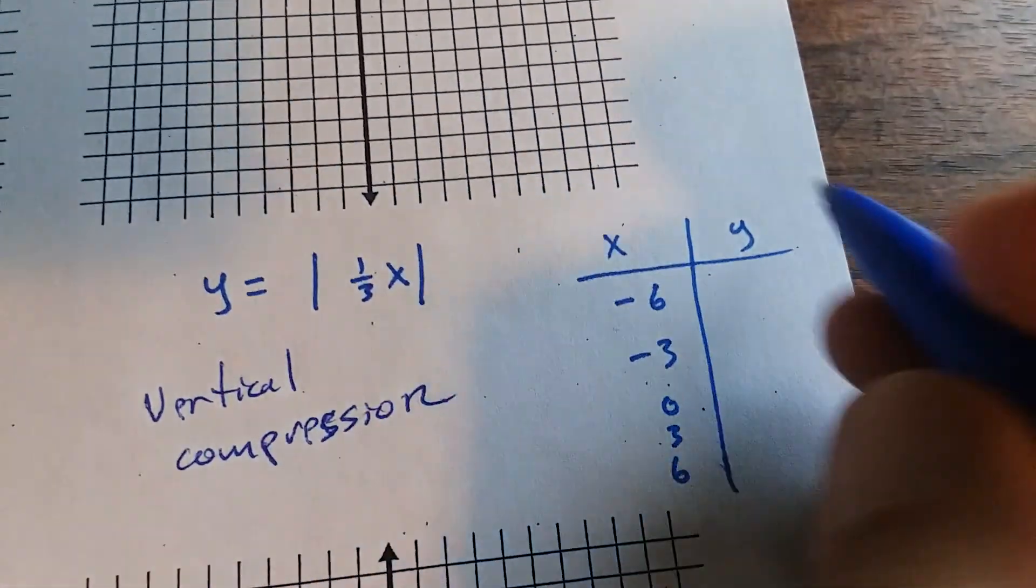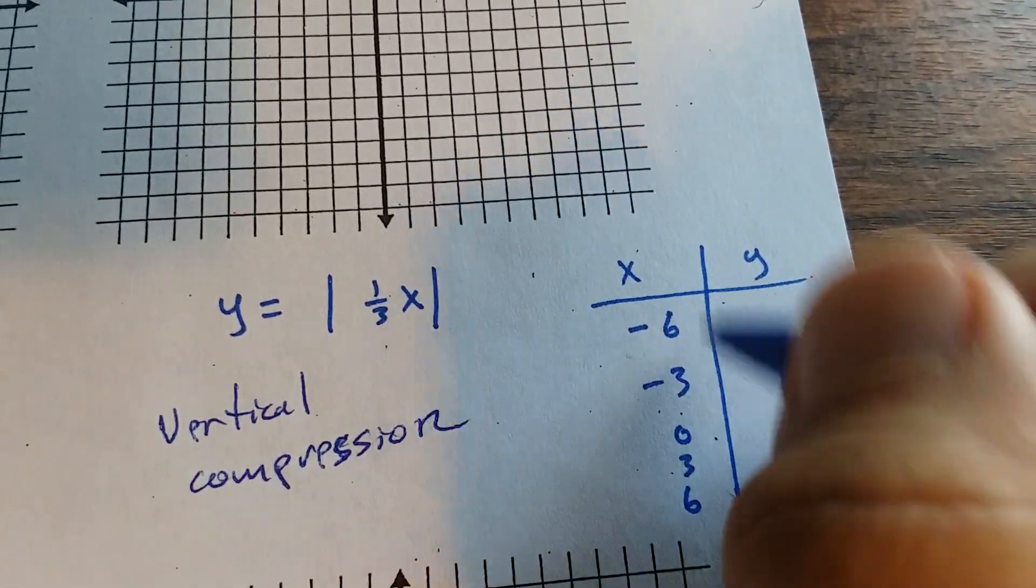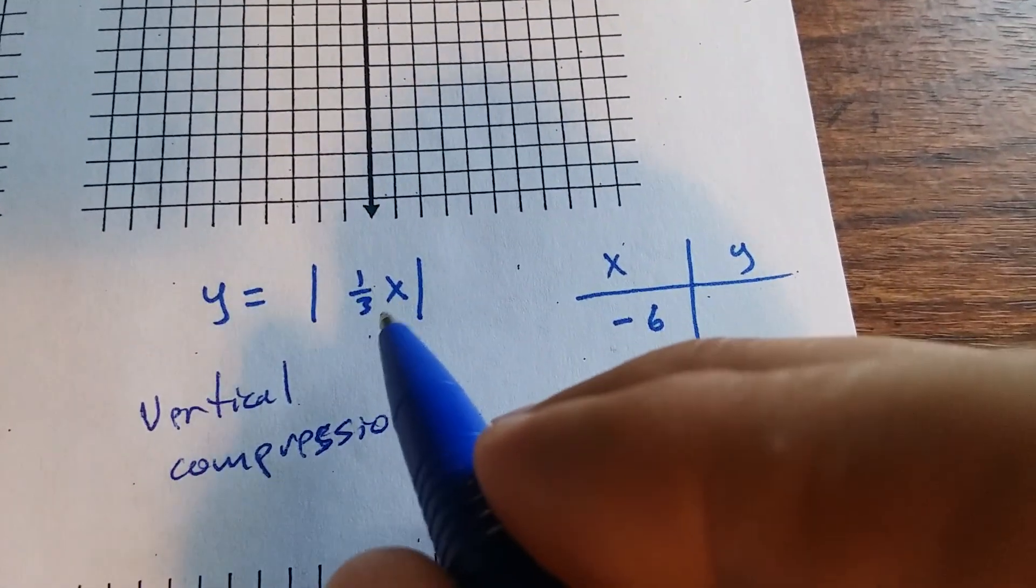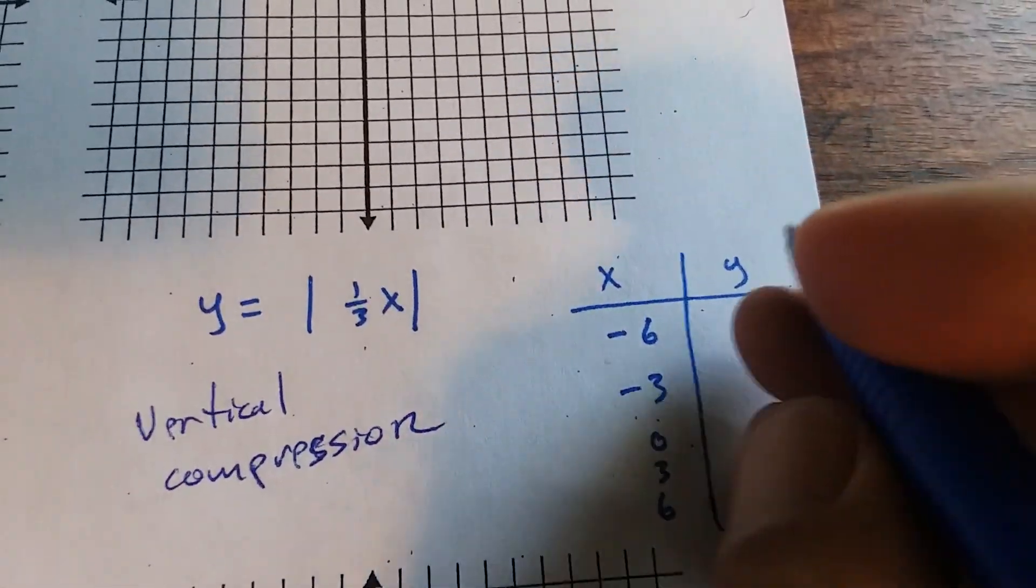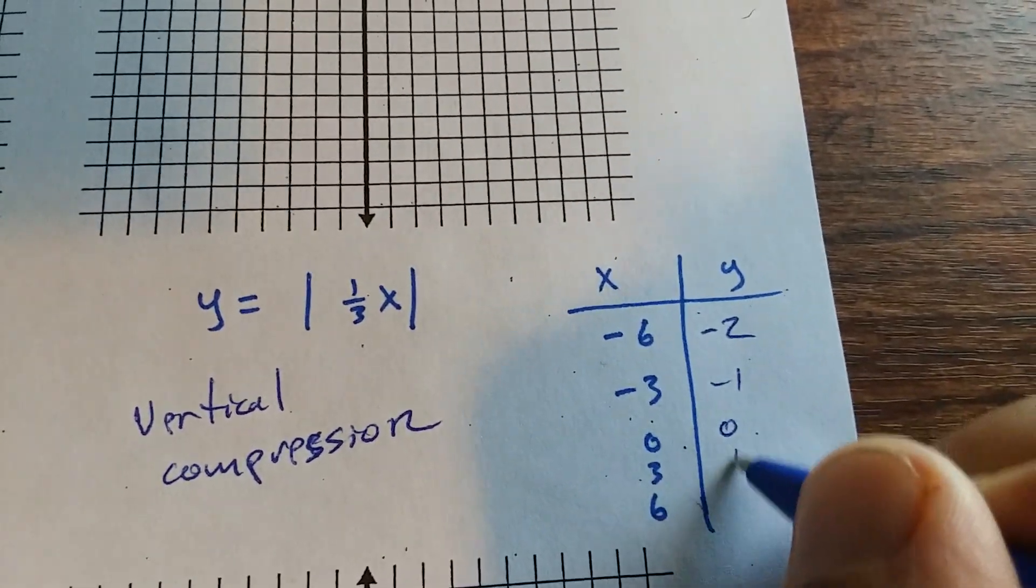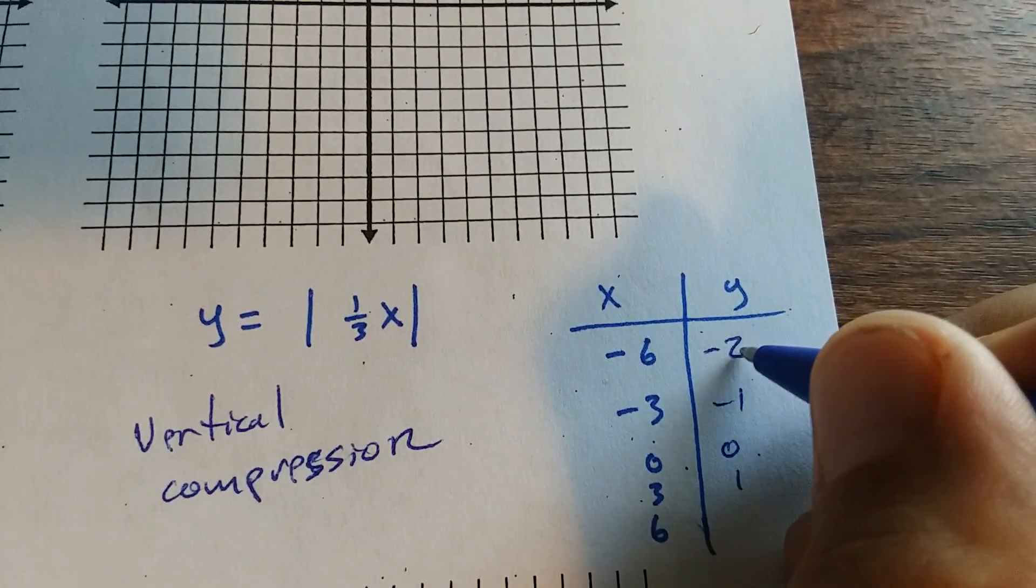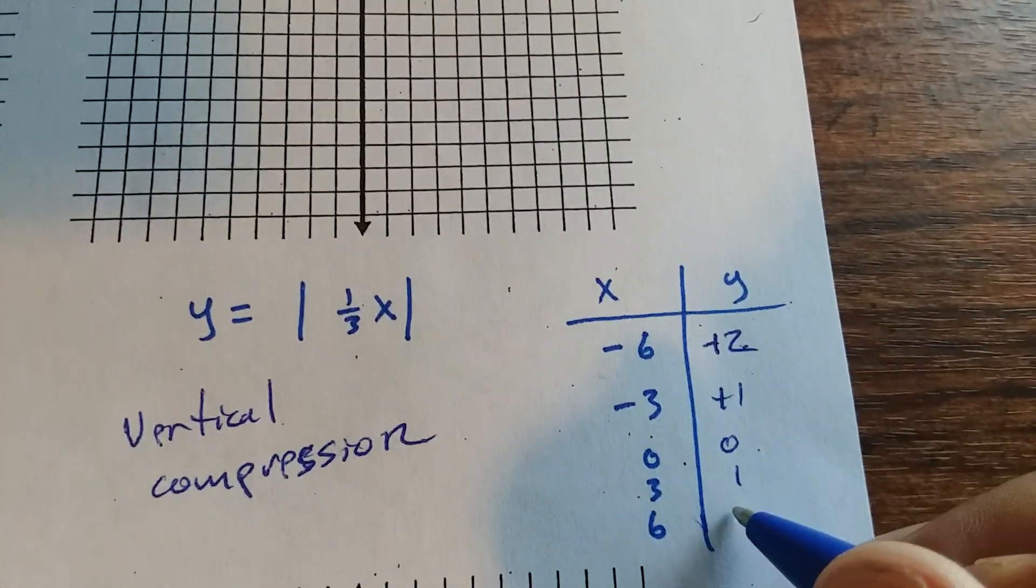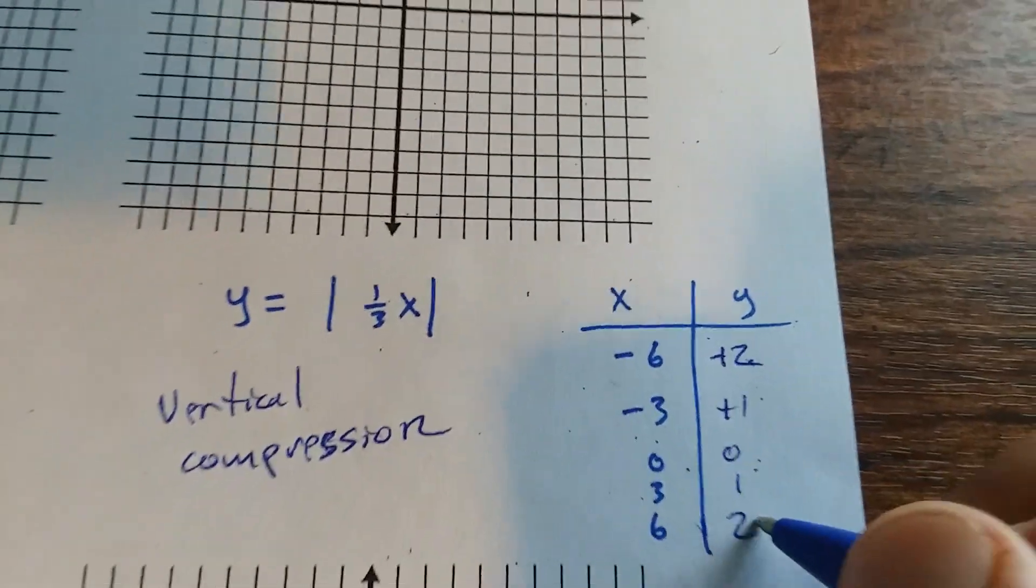So 1 third of x. So you aren't going to be given these values. I chose these specifically because it's going to give me a nice integer. 1 third of negative 6 is negative 2. Negative 1, 0, 1. Well, it's going to be positive. It's going to be positive. Because you're taking the absolute value. So it's going to be 2, 1, 0, 1, 2.